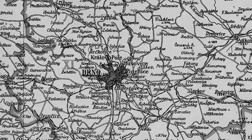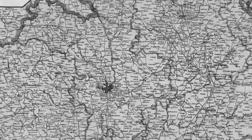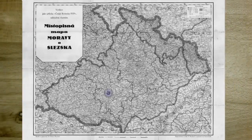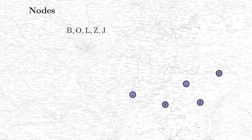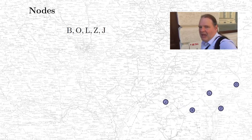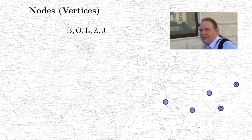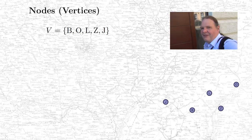Today it's hard to reconstruct which towns exactly were on Saxel's list, so I will just use Moravia's five biggest cities as an example. These are Brno, Ostrava, Jihlava, Olomouc, and Zlín. These five cities are going to be the nodes of the network we are going to build. In math, such network nodes are called vertices. And together, the five nodes form a set — a list of things — in this case the vertex set V.